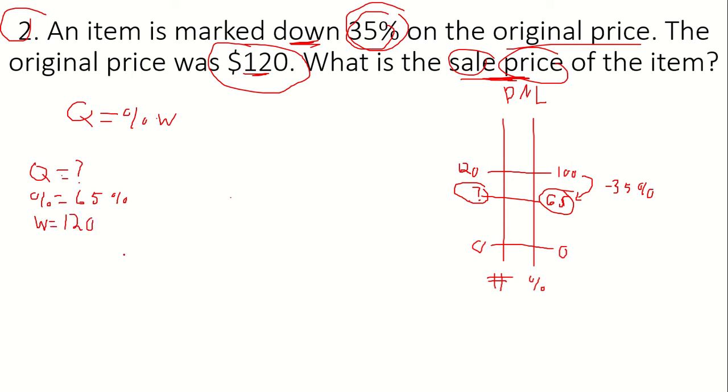So, quantity equals percent times the whole. We're going to substitute our values in here. Quantity still is unknown. We're going to convert 65% into 0.65. That's going to be 0.65 multiplied by our whole of 120.